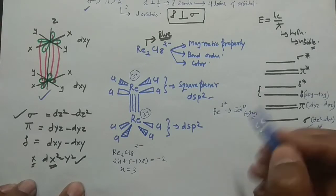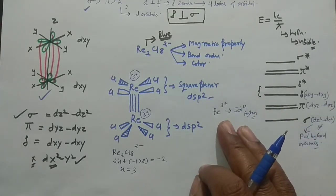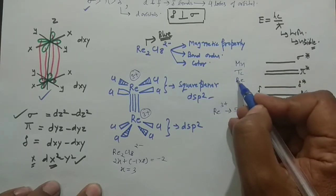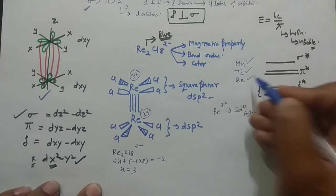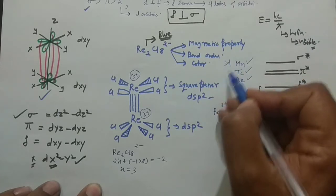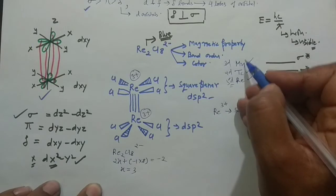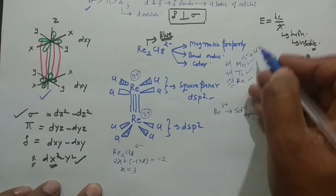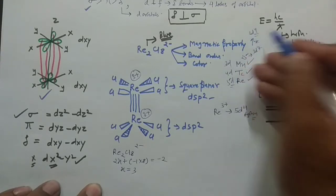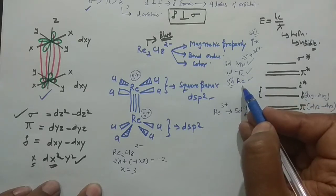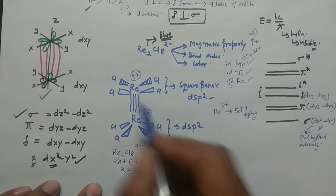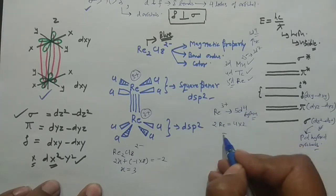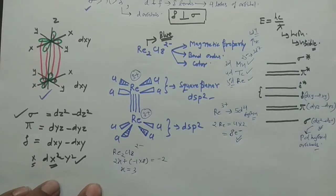Using the mnemonic 'Manoj technical Re' for the transition metal series — Mn, Tc, Re — manganese (Z=25) in the neutral state is a 3d⁷ system; losing 3 electrons gives 3d⁴. Similarly for Tc (4d) and Re (5d). So rhenium in +3 is a 5d⁴ system, meaning one rhenium has 4 electrons, and two rhenium atoms together have 8 electrons total.